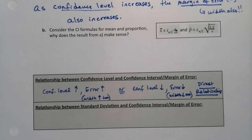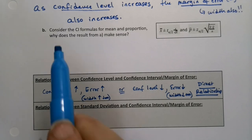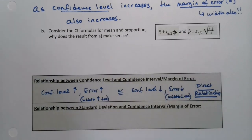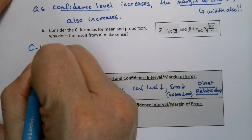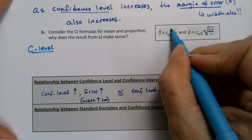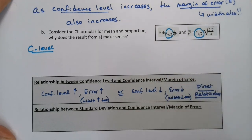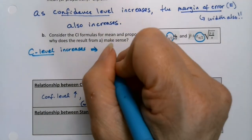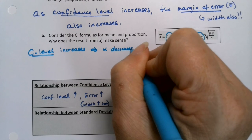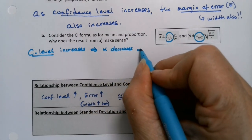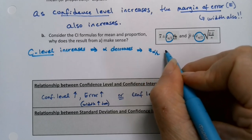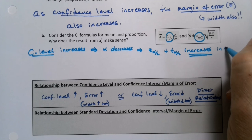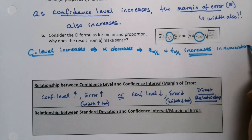Why is this happening? Your confidence level affects the T-alpha-over-two and the Z-alpha-over-two in the confidence interval formulas. If your confidence level increases, that means your alpha decreases. And if alpha decreases, what happens to your Z-alpha-over-two or T-alpha-over-two? That value is in the numerator — out in front — so when it increases, it causes everything to increase.